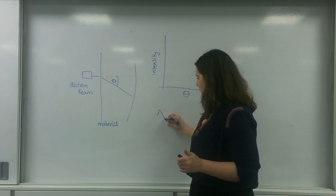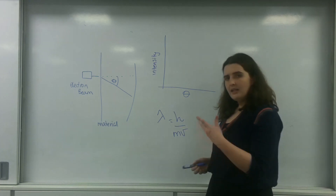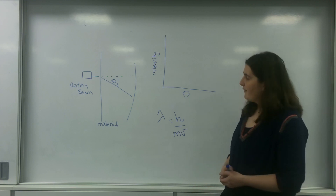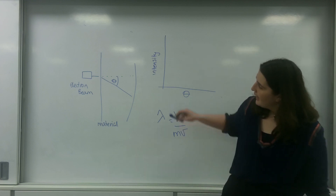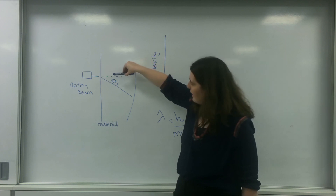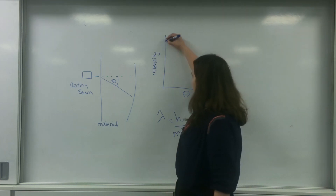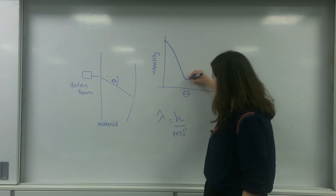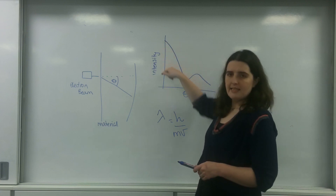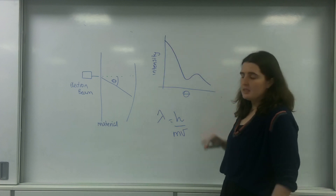We get these high-energy electrons, fire them through, and they diffract, causing a diffraction pattern. I can measure this diffraction pattern — I'll have a central maxima, and as the angle goes down I'll get alternating bright and dark regions, or maxima and minima. I can plot this on a graph of intensity versus angle — a really bright central peak, then a dark region, then a bright region, then dark again.